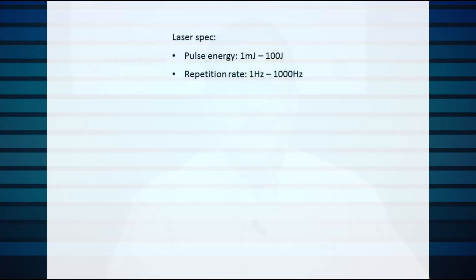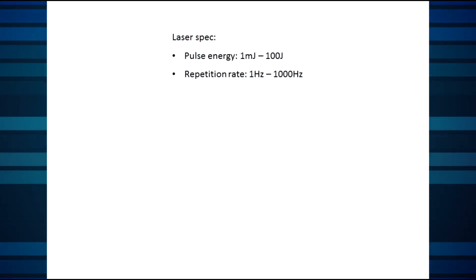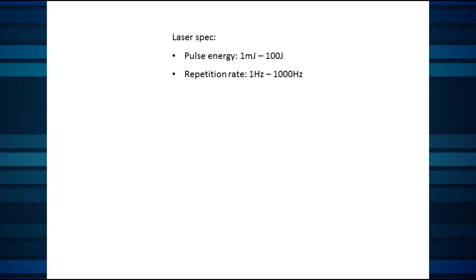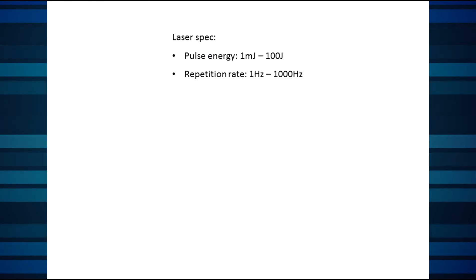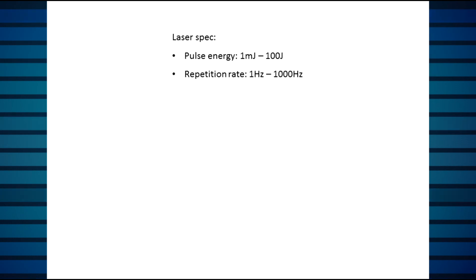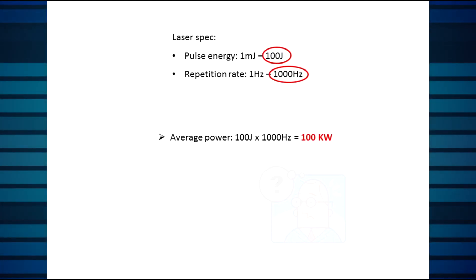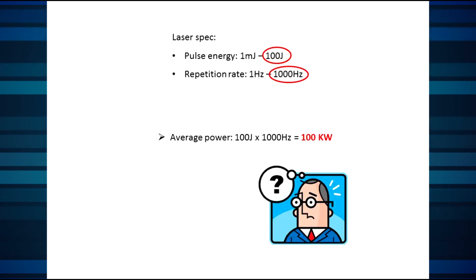We need to measure the laser beam and choose the right sensor. Here's where the fun begins. If the laser spec says pulse energy 1 mJ to 100 J and pulse rate 1 Hz to 1000 Hz, we might look for a sensor that can handle all of those numbers. But wait — 100 J pulses at 1 kHz means the average power is 100 kW. If that's not really your beam, you've fallen into the worst-case combination trap.